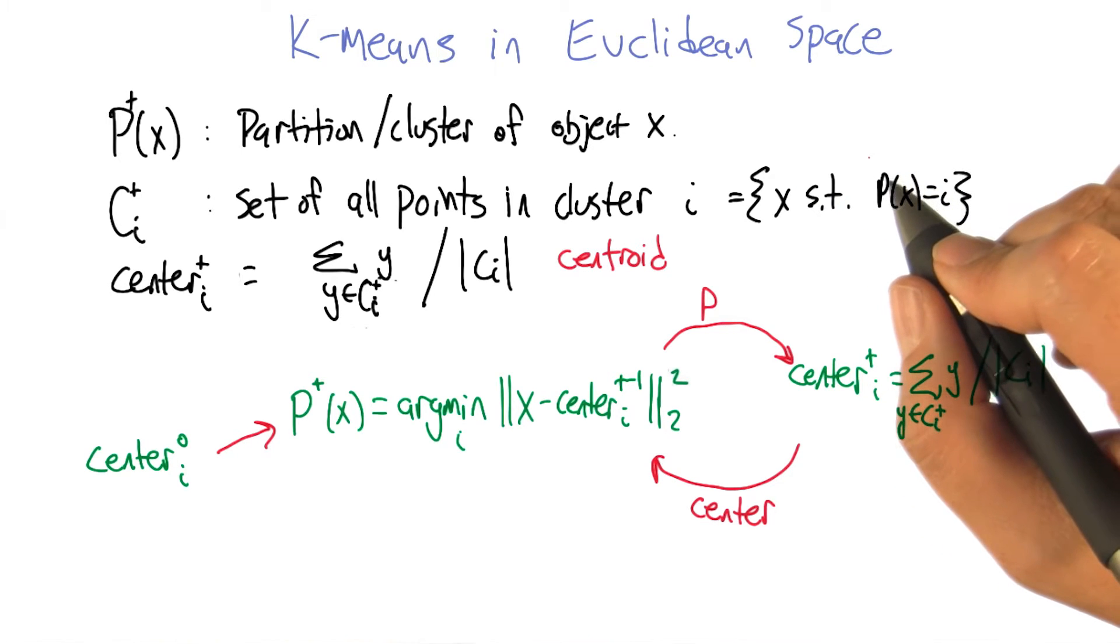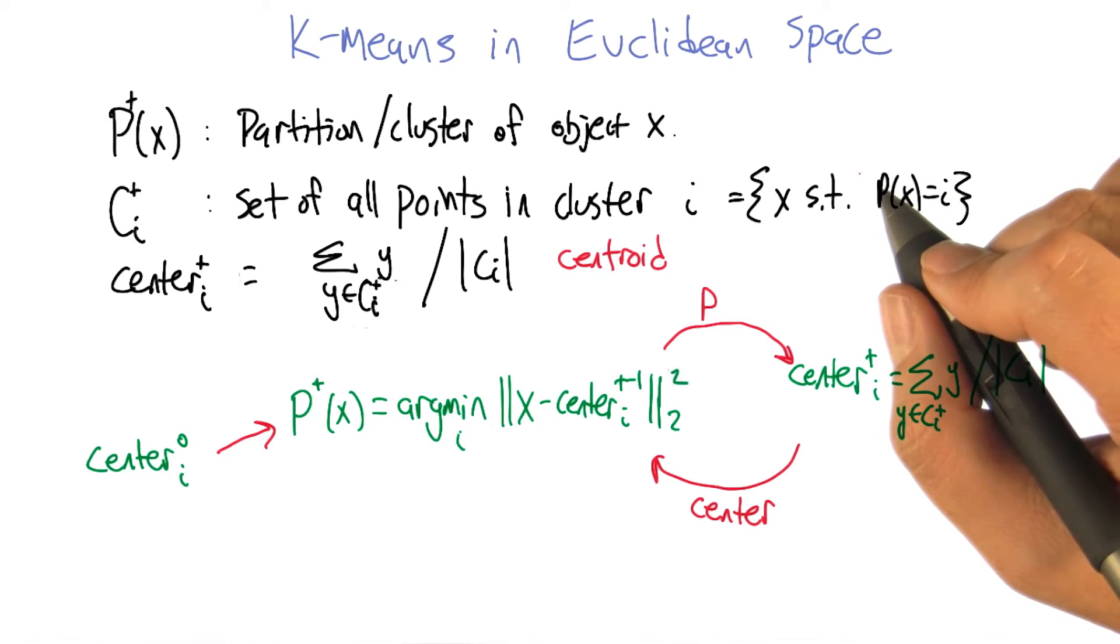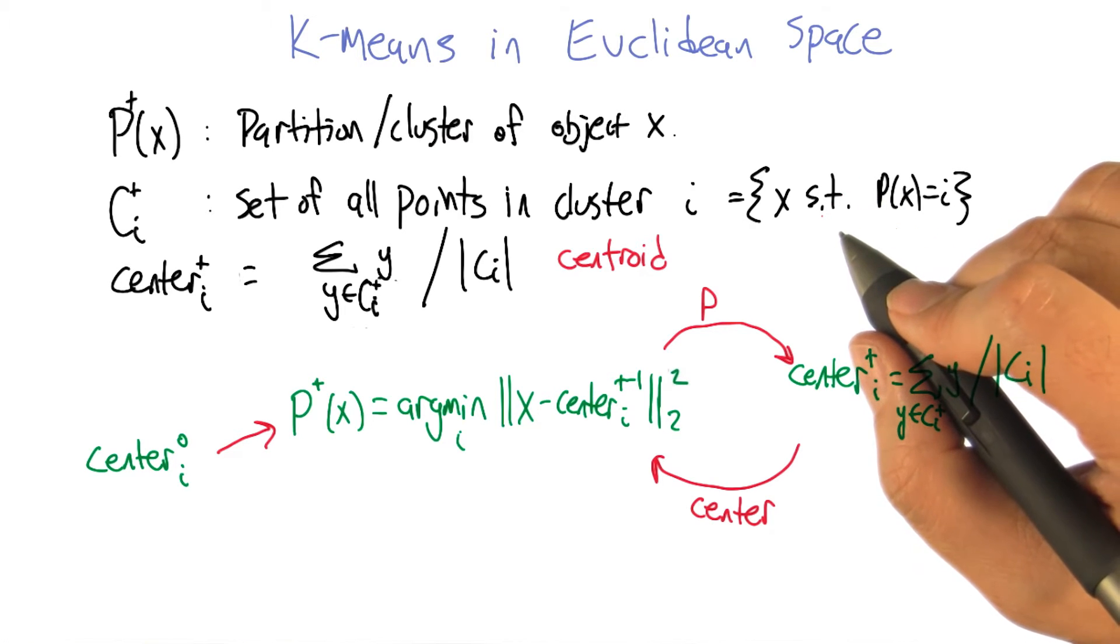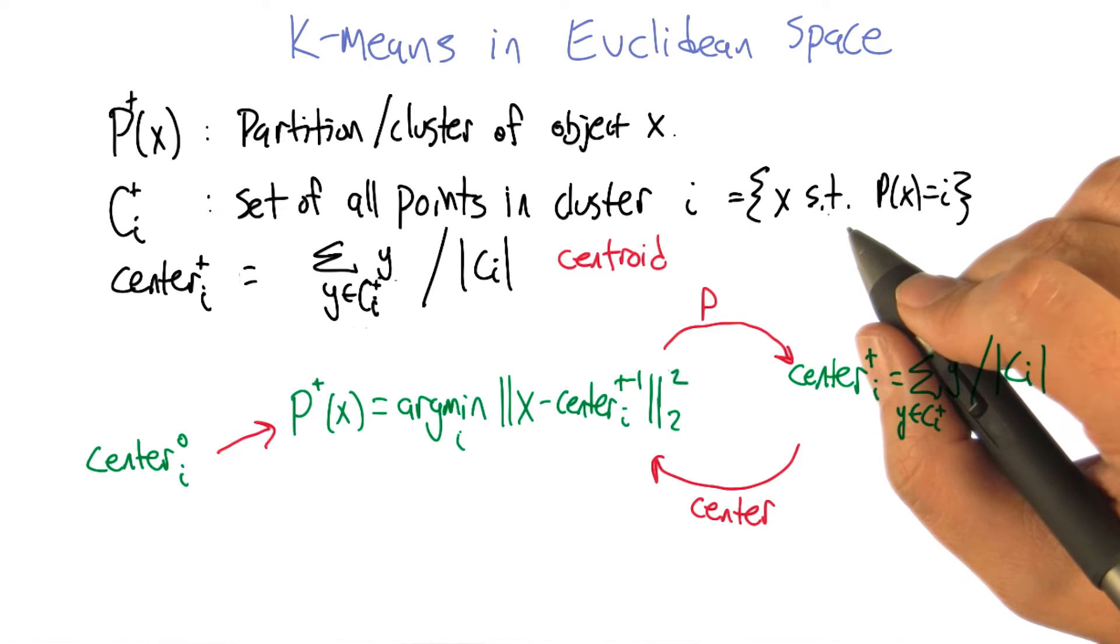In one dimension it's definitely the mean. In higher dimensions, it's like a per-dimension mean. So in fact you're going to end up with k means.